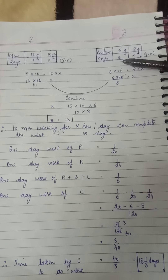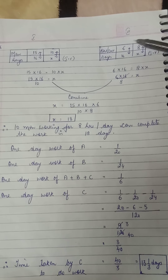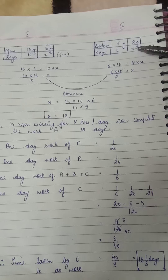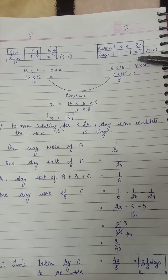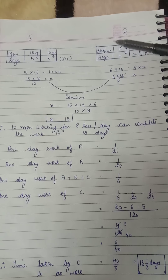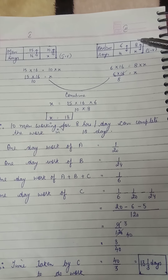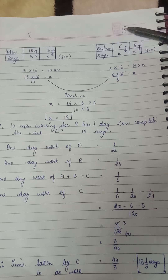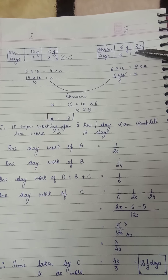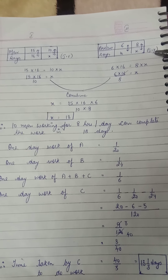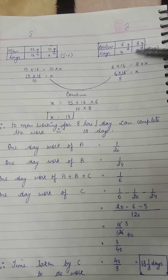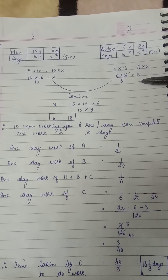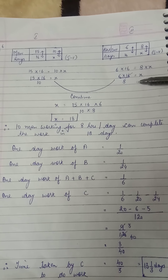Moving on to the second part — hours a day with days. If you work for 6 hours a day your work finishes in 16 days, and if you're working for 8 hours a day your work finishes in x days. You are increasing the number of hours a day, so obviously your work will finish in less number of days — more hours a day, less days. That's again inverse variation, so straight multiplication: 6 into 16 is equal to 8 into x. That's equation number two.